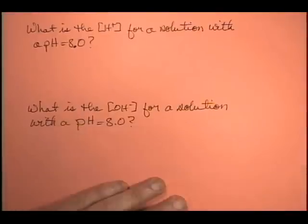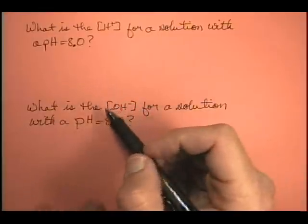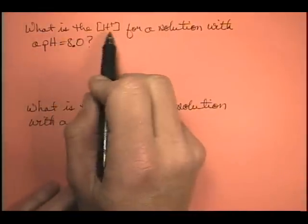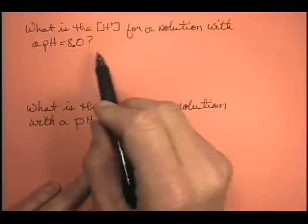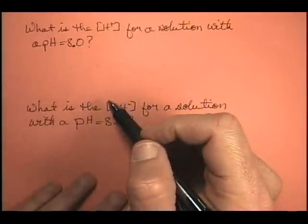Let's work a problem with the same solution and calculate a couple of different properties. The first part: what is the hydrogen ion concentration for a solution with a pH of 8.0?